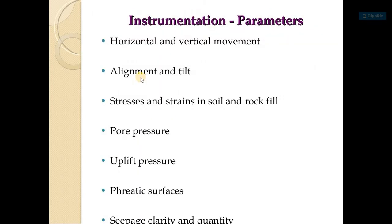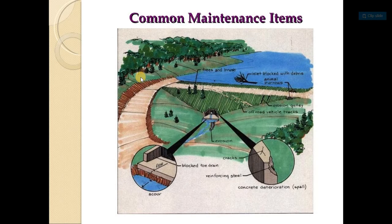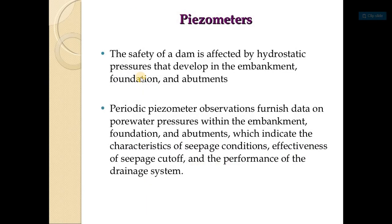Instrumentation parameters to be measured include: horizontal and vertical movement, alignment and tilt, stresses and strengths in soil and rock, pore pressure, uplift pressure, phreatic surfaces, and seepage clarity and quantity. Common maintenance items include scoring its flow, erosion, cracks, block toe, dam drains, drain forcing streams, and concrete deterioration.